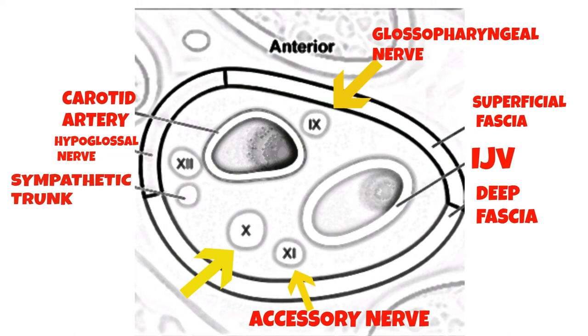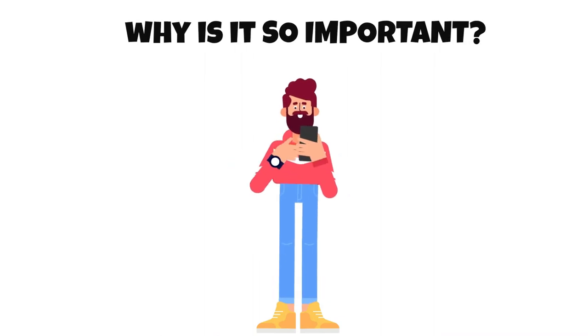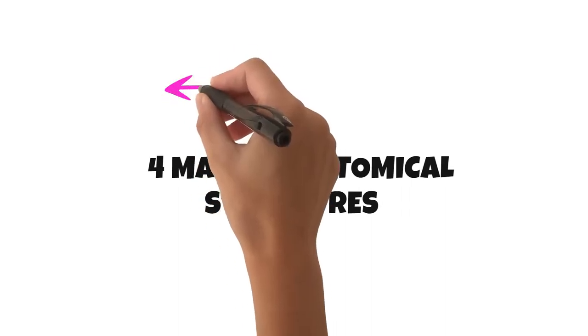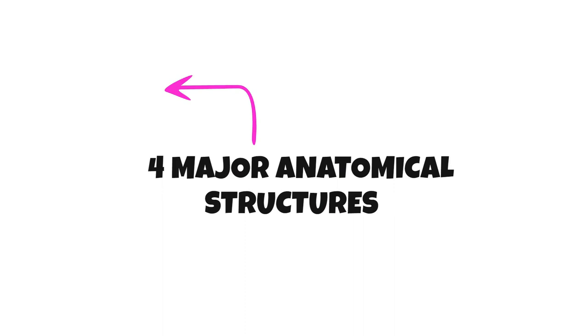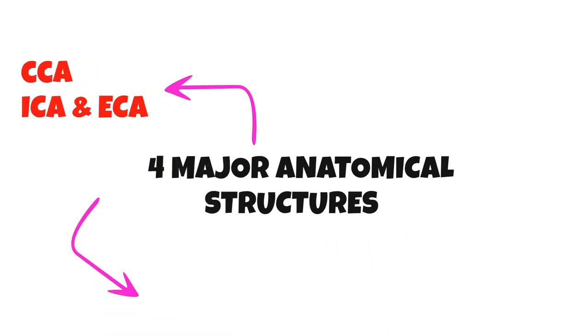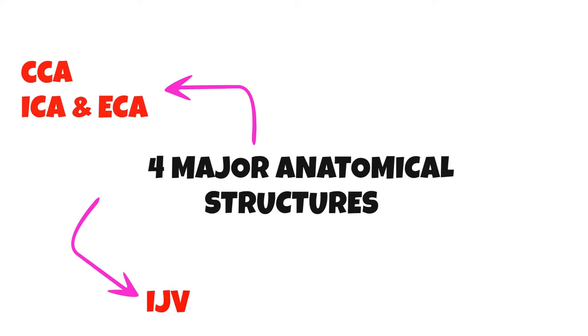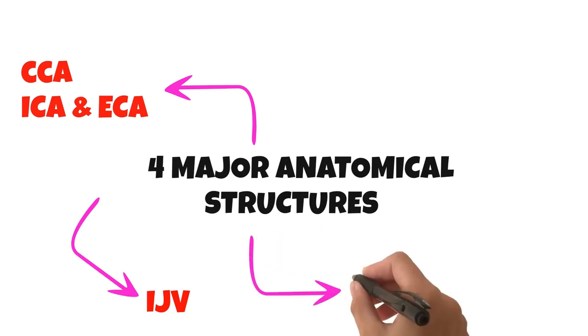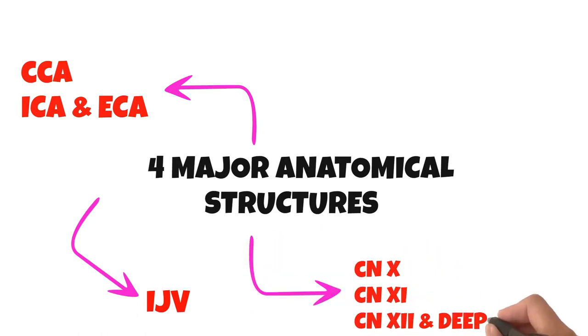The crottage sheath basically blends in front with the pre-tracheal and the investing layers of deep fascia and behind with the pre-vertebral layer of deep fascia. The major structures contained within the crottage sheath include the common crottage artery, parts of the internal crottage artery and the external crottage artery, the internal jugular vein, the vagus nerve, the recurrent laryngeal nerve, and also the deep cervical lymph nodes.